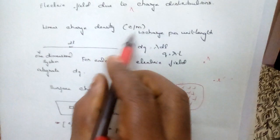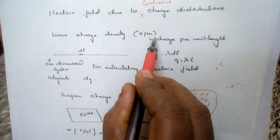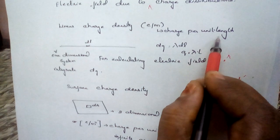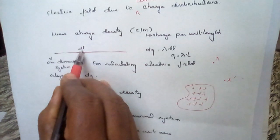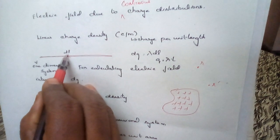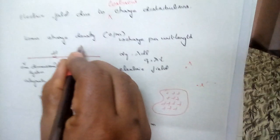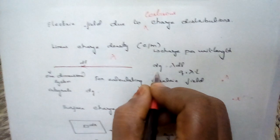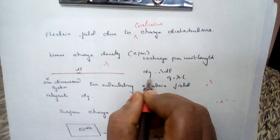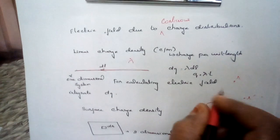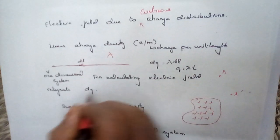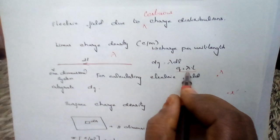The linear charge density has the unit coulombs per meter — that is, charge per unit length. Consider a linear line: the small elemental charge is denoted DL, since we are considering the line charge. In general, the line charge density is given by the notation lambda, and the charge in the line charge density is DQ, which is equal to lambda times DL. The charge density considered here is a one-dimensional system. For calculating the electric field, if we integrate the charge DQ, we get the total charge Q, which is equal to lambda times L.